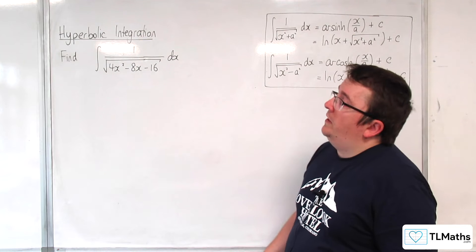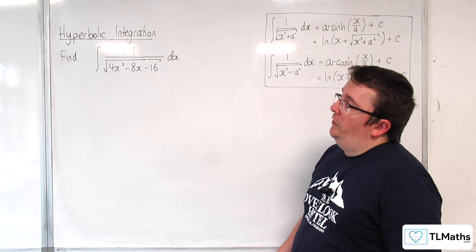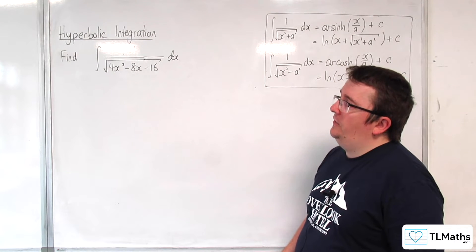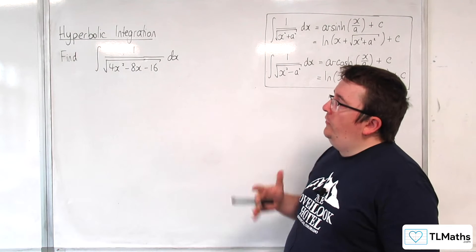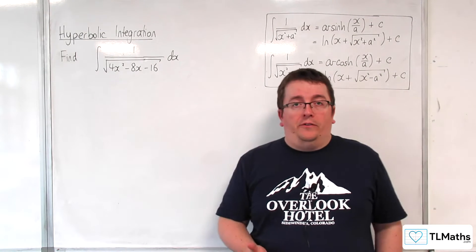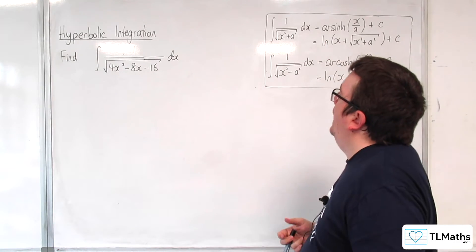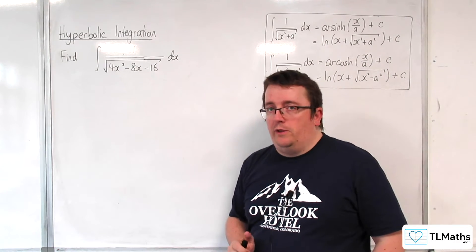In this video, we're going to be integrating 1 over the square root of 4x squared take away 8x take away 16. Now, this doesn't look nice, and it doesn't immediately look to be in either of the formats that we are used to.